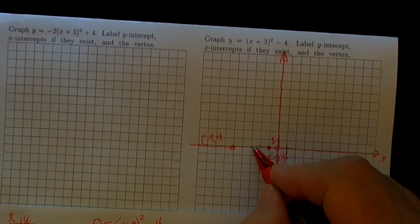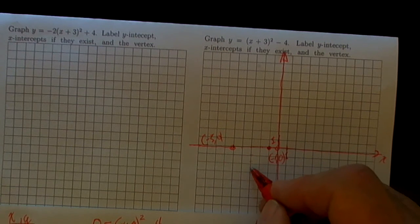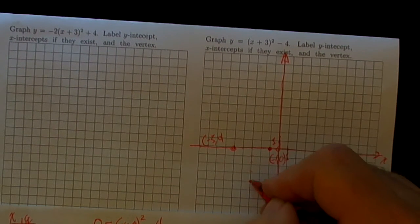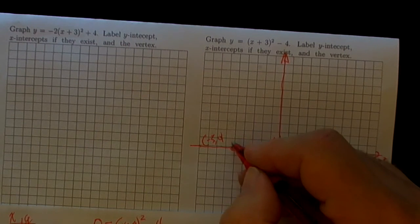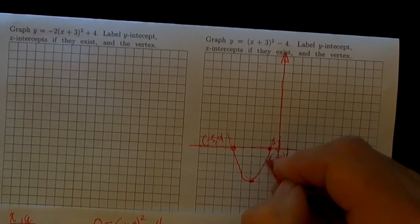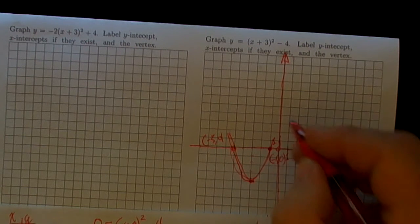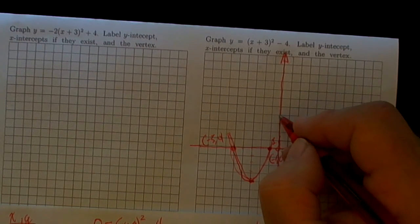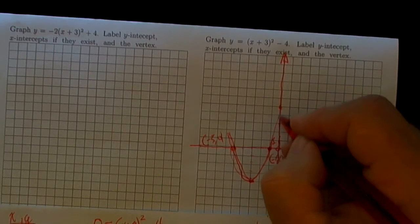Where was that vertex? (-3, -4): -1, -2, -3, -4. We knew that because this was in vertex form. So this is coming up like this, and the y-intercept is at 0, 1, 2, 3, 4, 5. That's pretty reasonable.